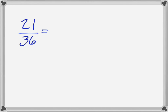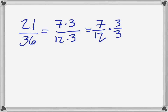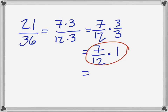What we're really saying is that 21 is the same thing as 7 times 3, and that 36 is the same thing as 12 times 3. That equals 7-twelfths times 3 over 3 — we can split that into two fractions, and 3 over 3 is the same thing as 1. The identity property tells us that 7-twelfths times 1 is equal to 7-twelfths, so it's the identity property that allows us to cancel those 3s, because multiplying by 1 does not change the value of the fraction.